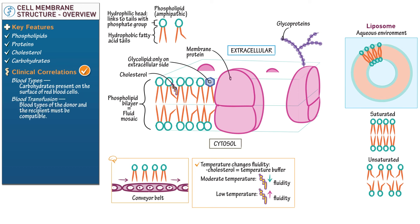Denote that in a blood transfusion, the blood types of the donor and the recipient must be compatible. If they aren't, the glycoproteins on the donor's red cells are recognized as foreign and can trigger an immune response in the recipient.